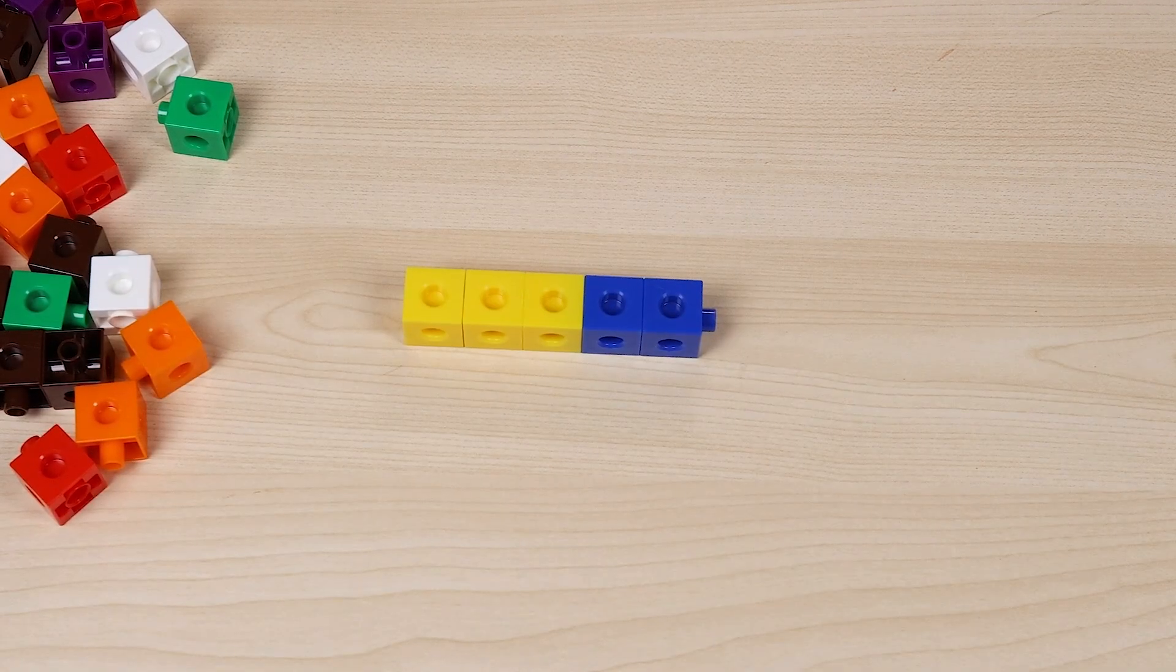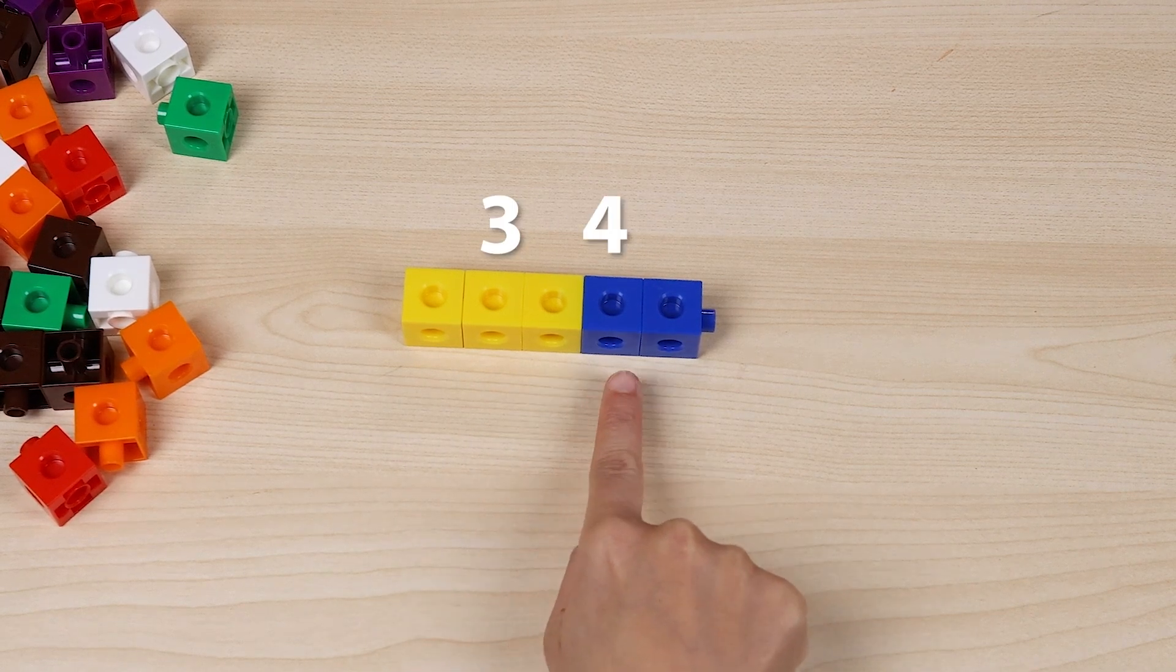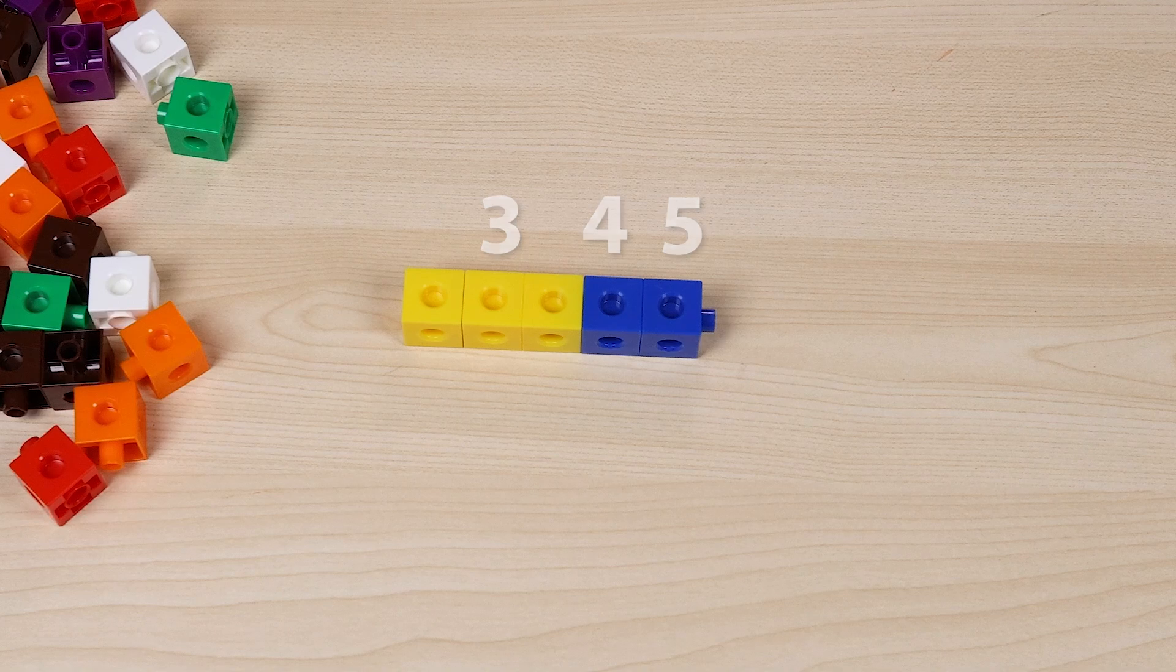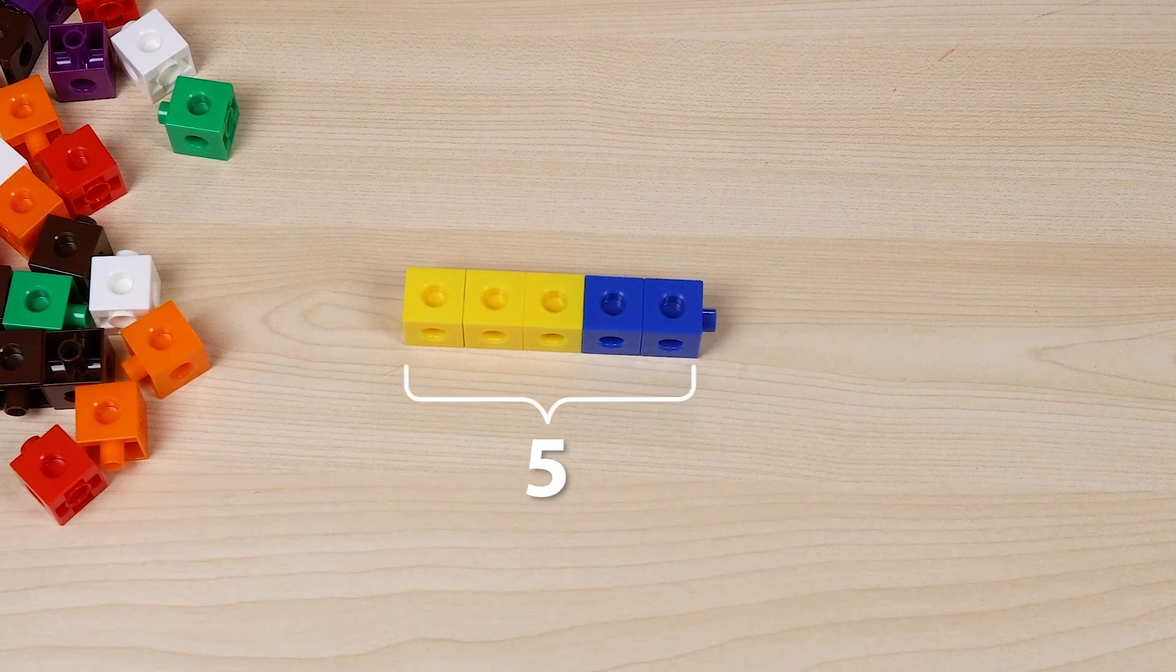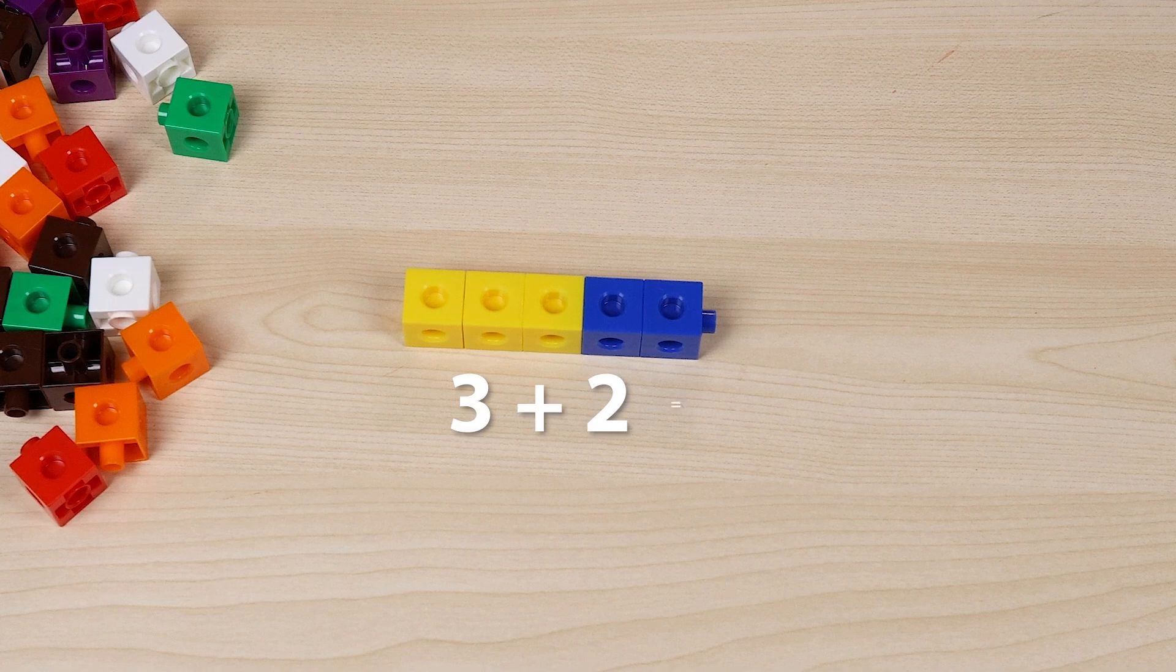Let's start with the number of yellow cubes, three, and count on. Three, four, five. There are five cubes in all, so three cubes plus two cubes makes five cubes.